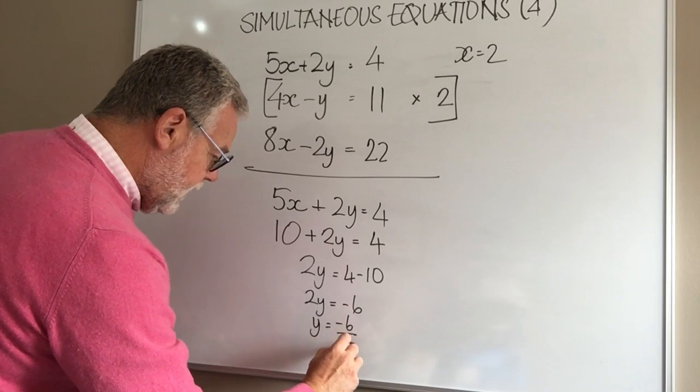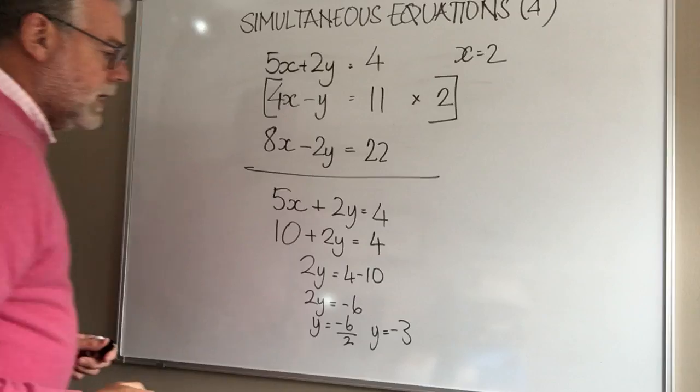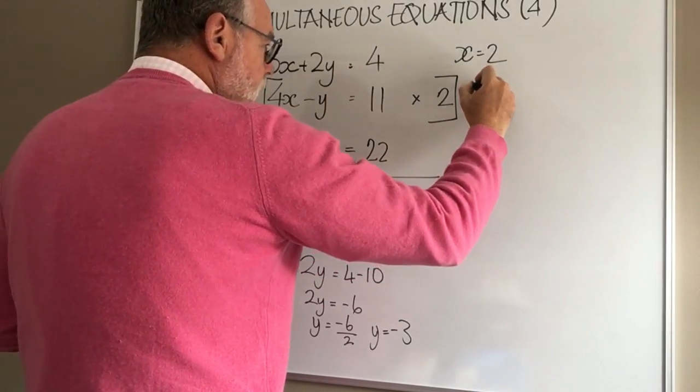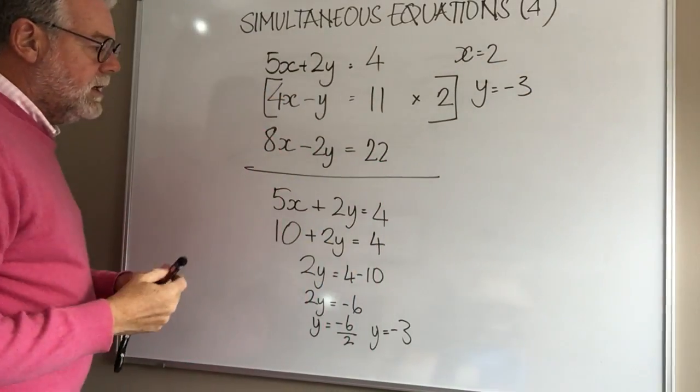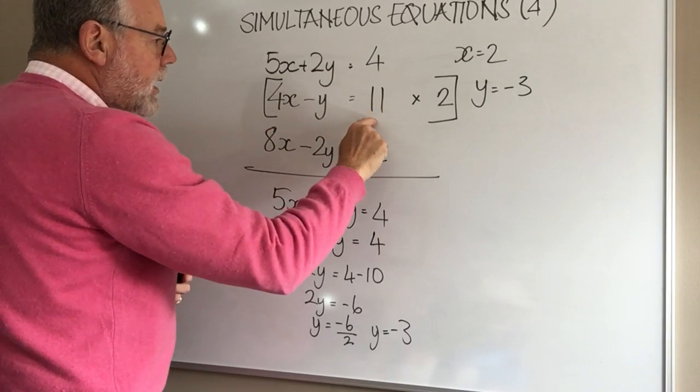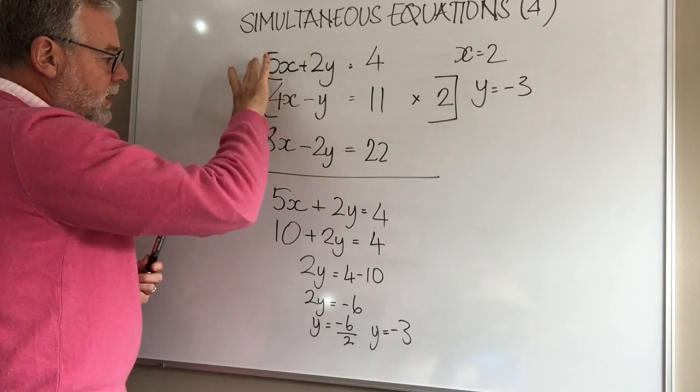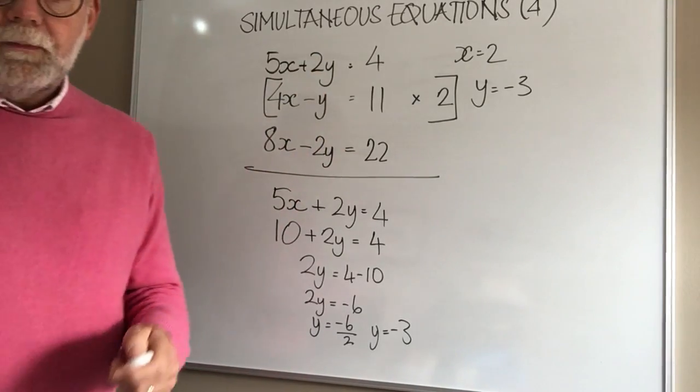So in our solving of the equations this time, x equals 2, y equals negative 3, and how did we do it? We looked for a way of creating an equation that would allow us to remove one of the variables and that's it.